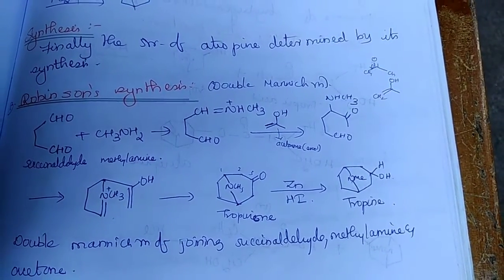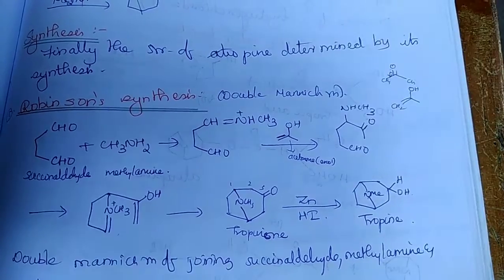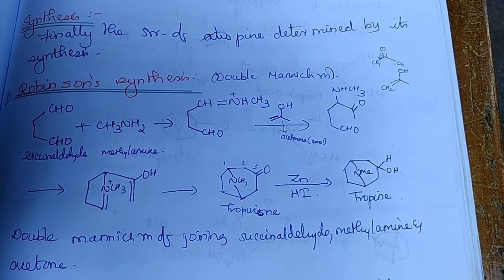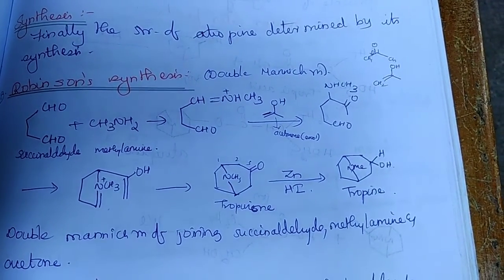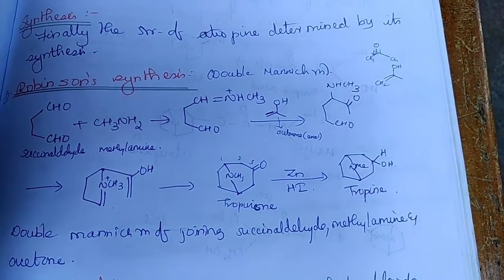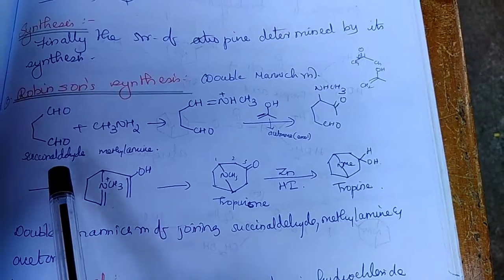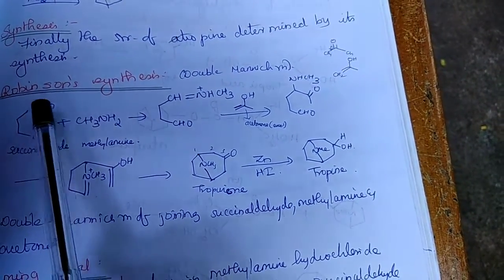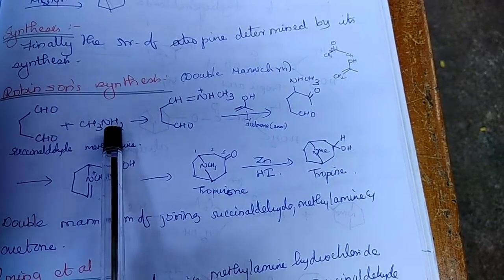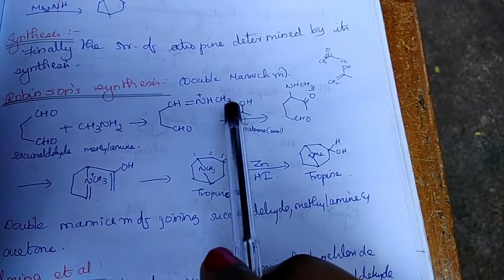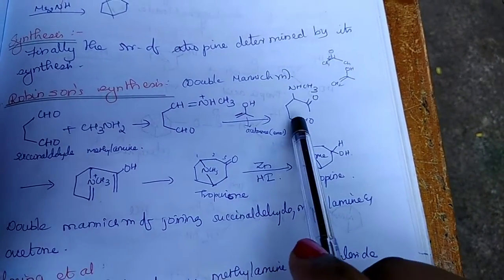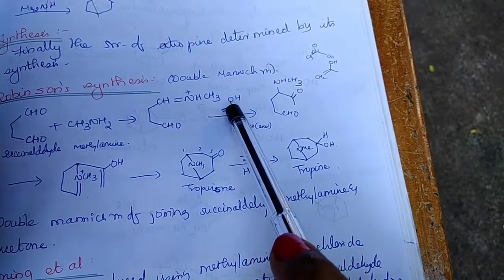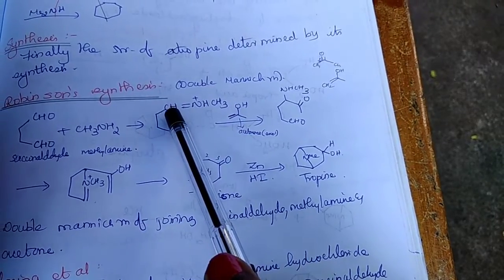Using the above facts, the structure of tropine is determined by its synthesis. Robinson synthesis is from succinaldehyde, methylamine and acetone. The first step involves the condensation of succinaldehyde and methylamine. As you can see, CH double bond, the NH from methylamine, CH3. And then acetone adds to this compound in enol form. And we get this compound. The NH-CH3 goes here and the acetone adds at this carbon.